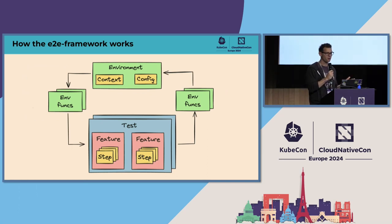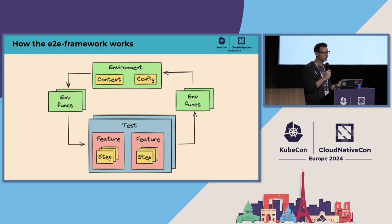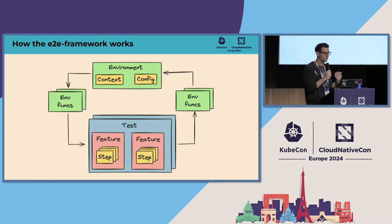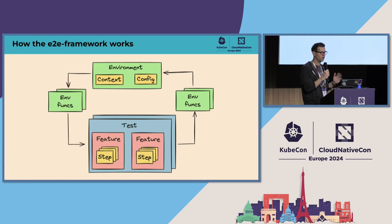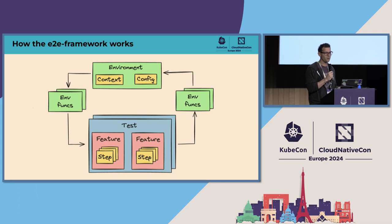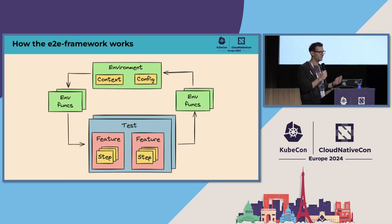At the heart of the framework is the environment object. It has a config to store your test suite configuration, customizable with your own CLI flags, and a context you can use to pass signaling and data across each phase of the tests. You can use functions to customize different stages of the environment, including environment setup, before a test, after a test, or when tearing down the environment. Then you have regular Go tests made up of one or multiple test features. A feature is a collection of steps executed as a group, where a step is a granular operation. The steps are: setup, assess, and teardown.